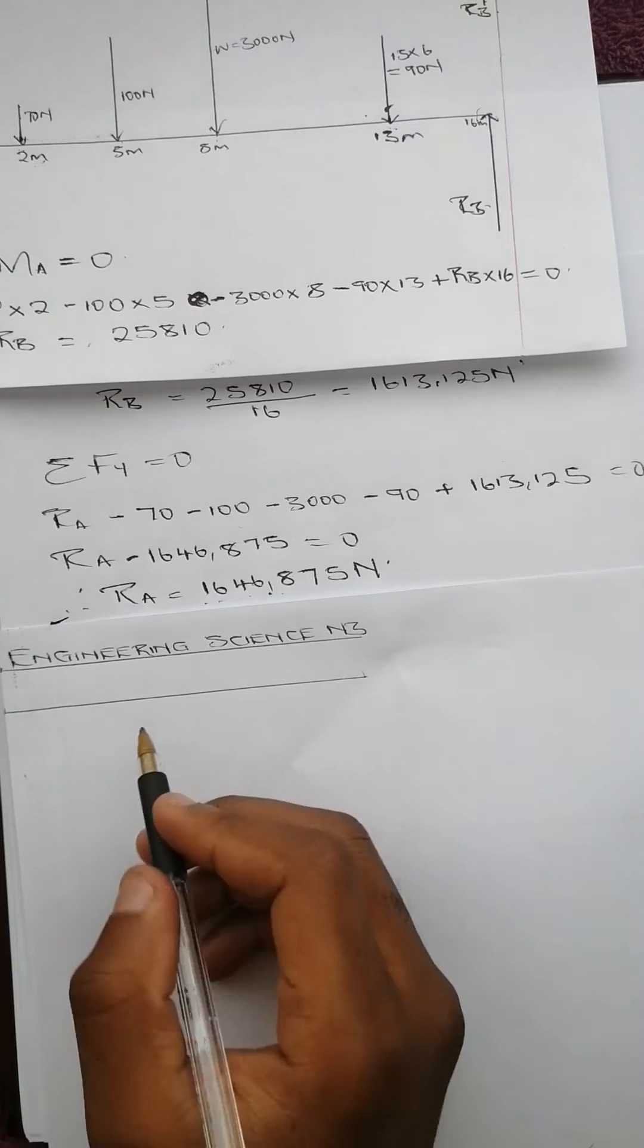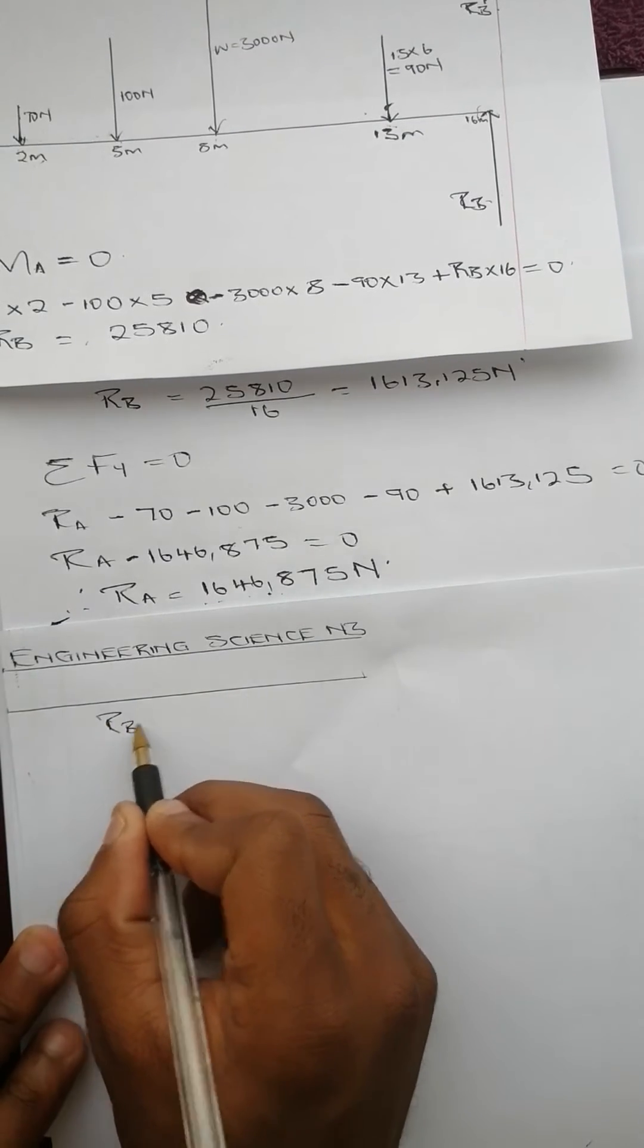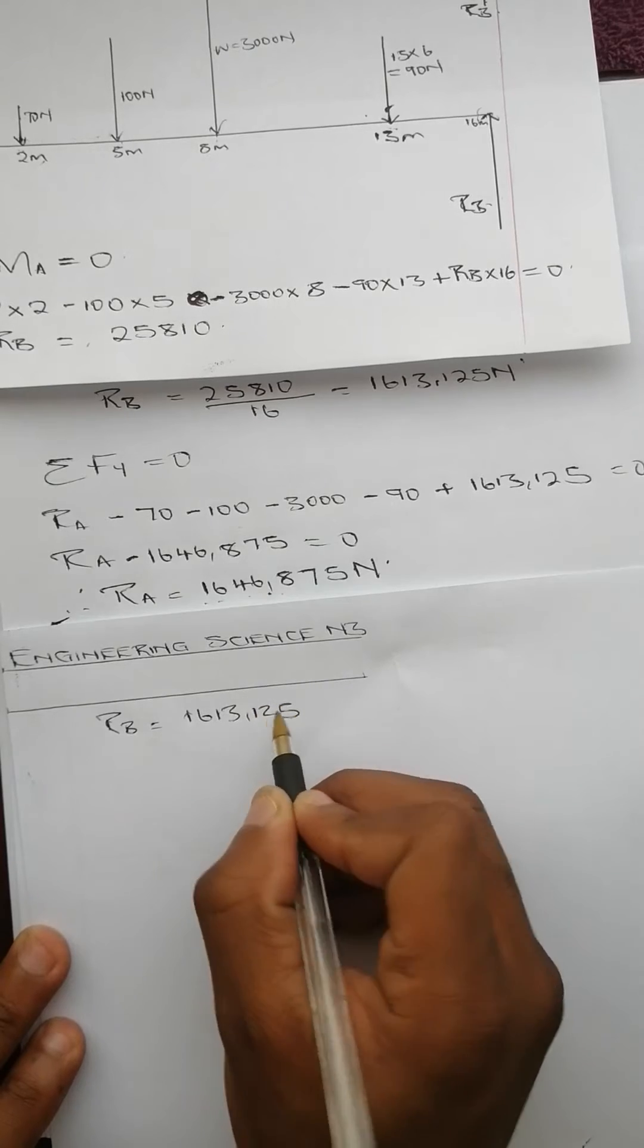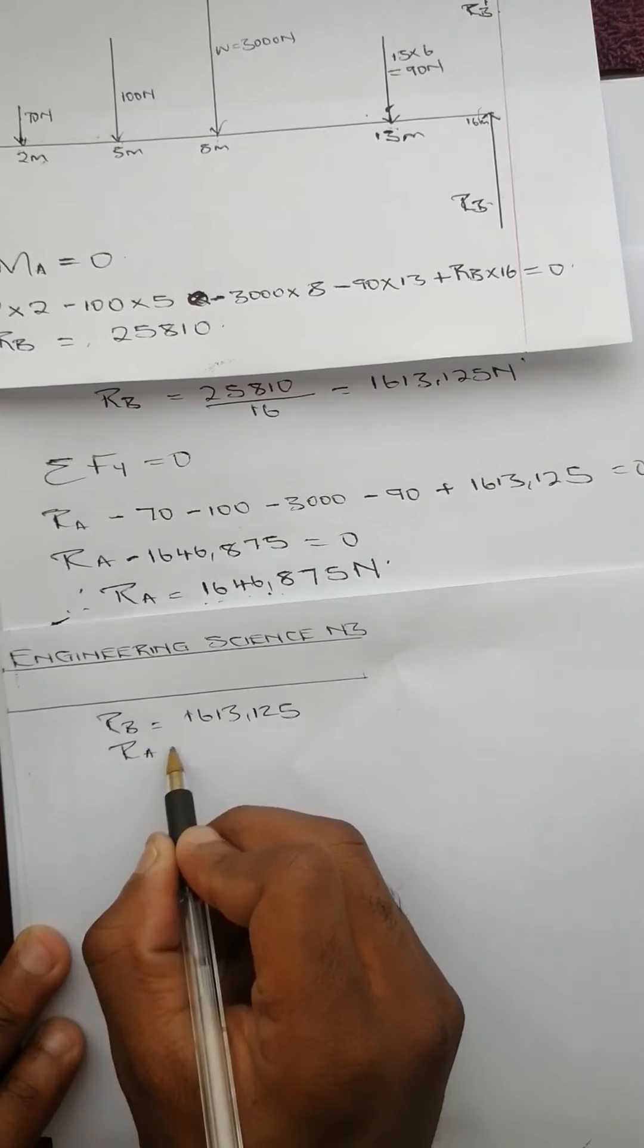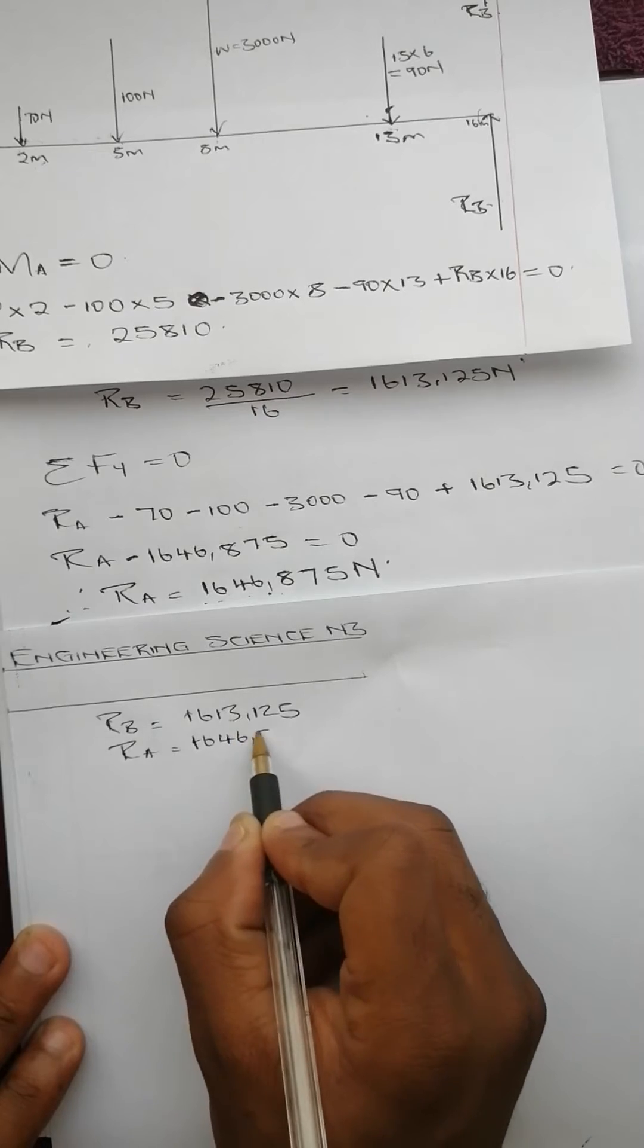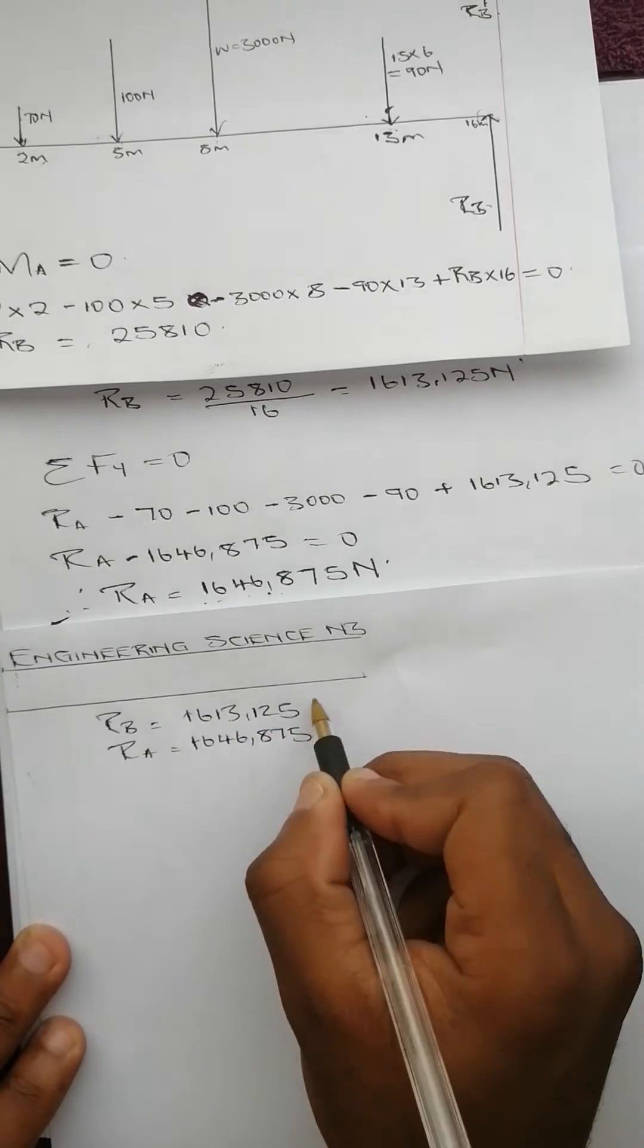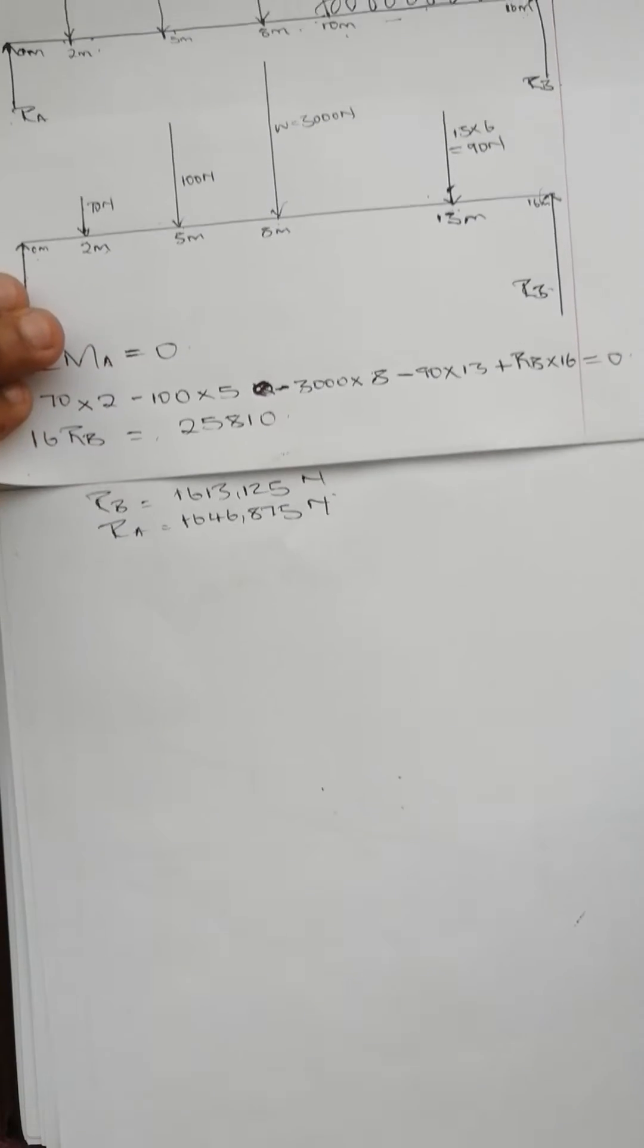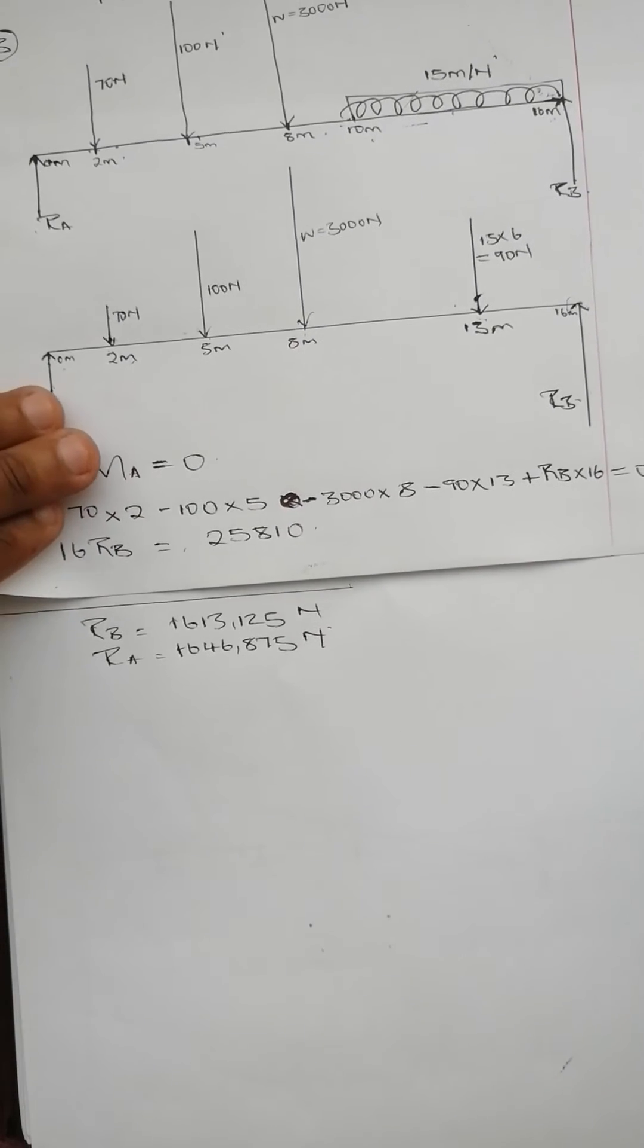Let me write RB equals 1613.125 and RA equals 1646.875. There's a new section so that I can work much better on this page.